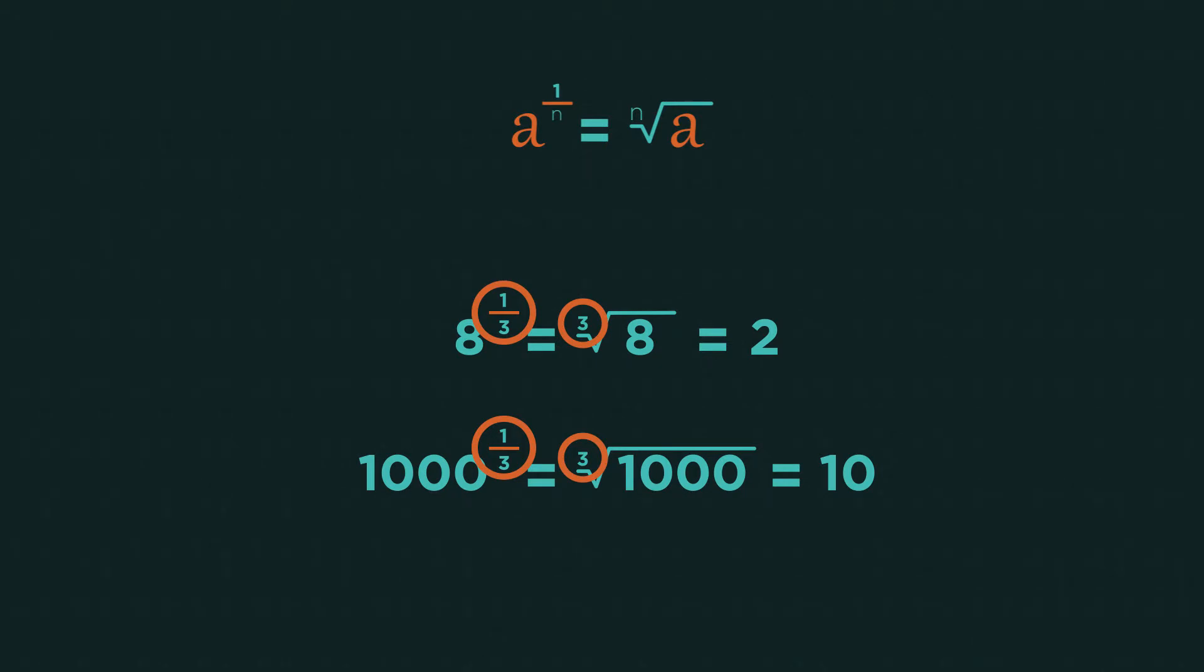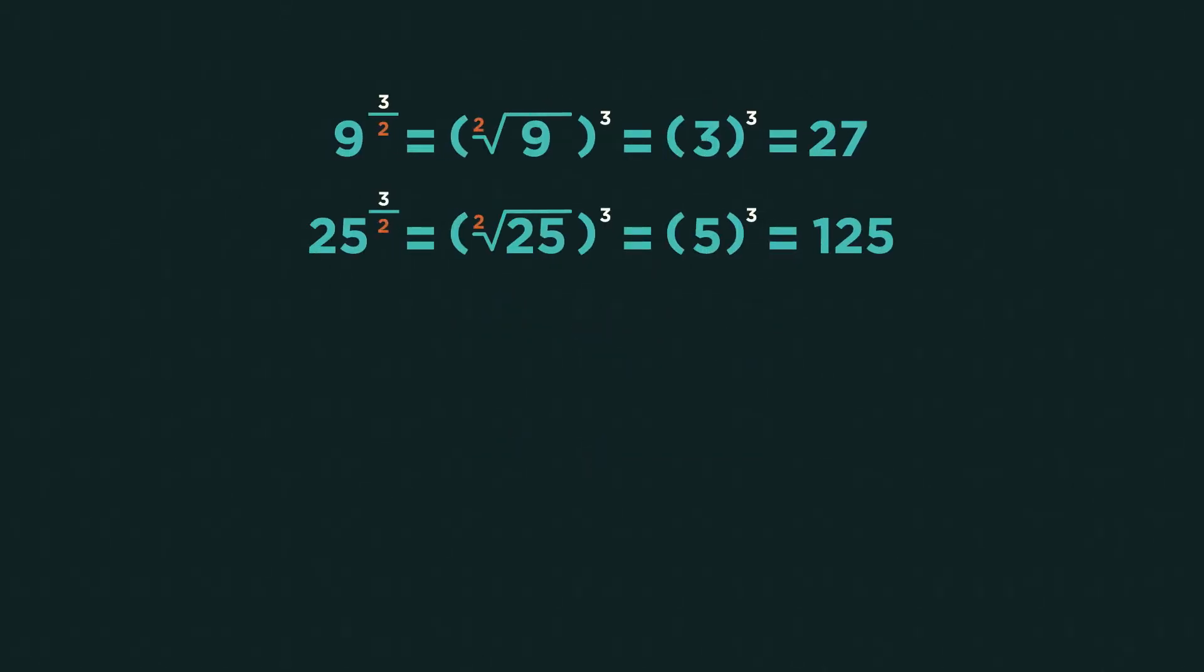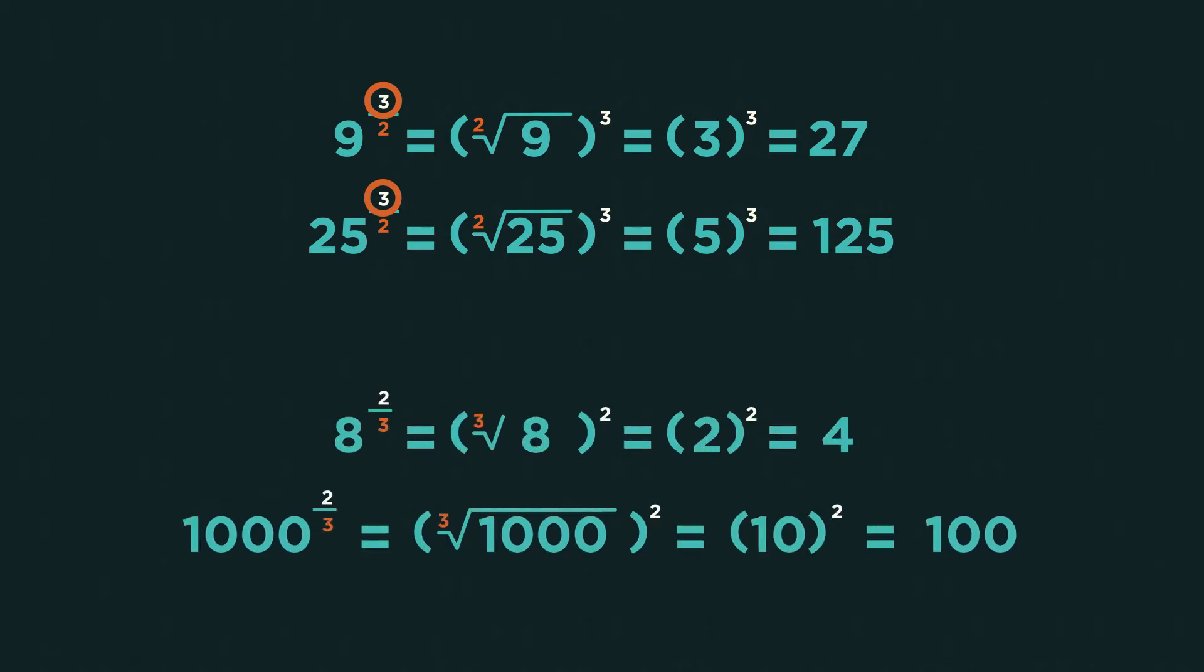But what if the numerator isn't one? So three over two and two over three. What happens now? Can you see that the denominator is still the root of the number? So square root for these ones and cube root for these ones. But now the numerator raises the root to the power. So power of three for these ones and power of two for these ones.